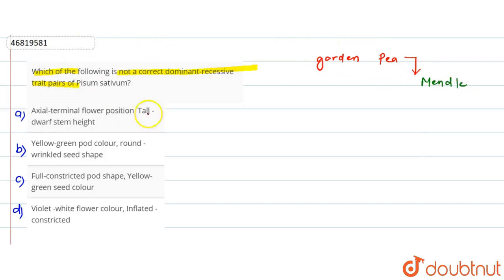If we look at the traits here, the first trait is the position of flower. The axial position is dominant, and the terminal position is recessive. So this is correct.